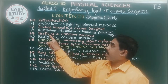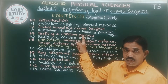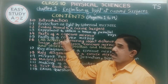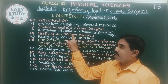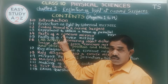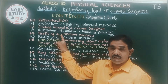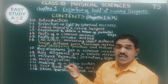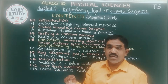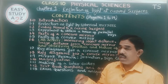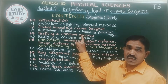Then we have parts of the concave mirror. We will discuss about the pole, center of curvature, radius of curvature, focus, and focal length of the concave mirror.